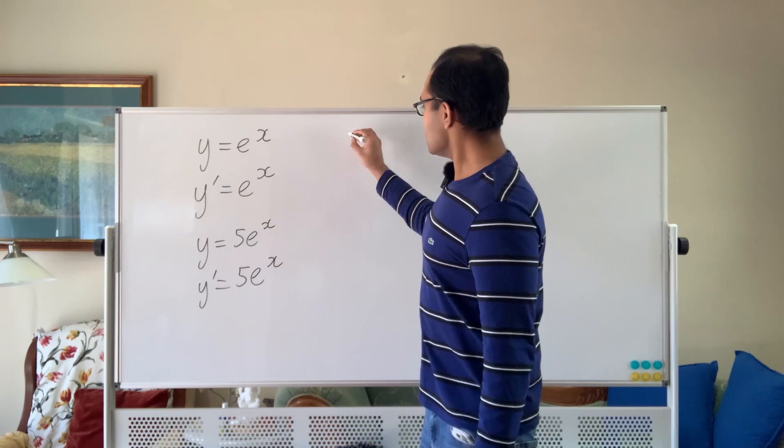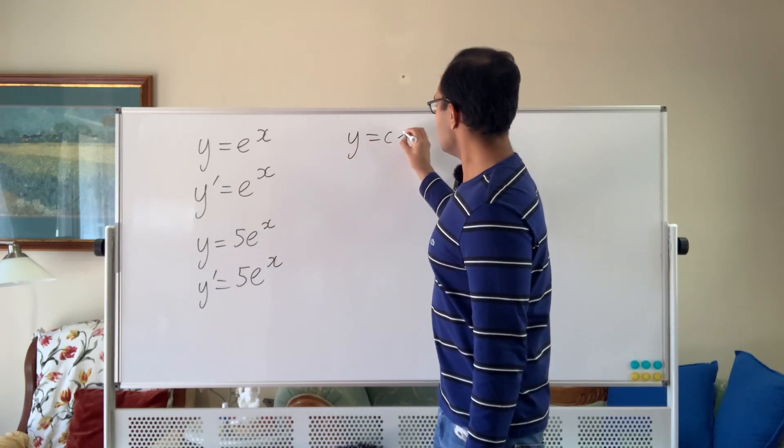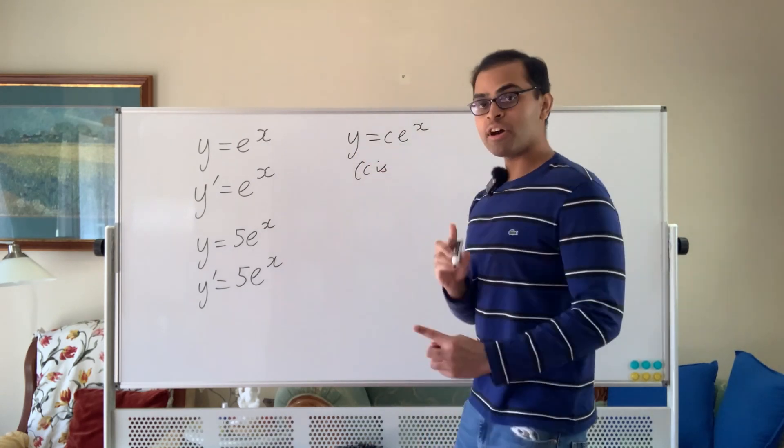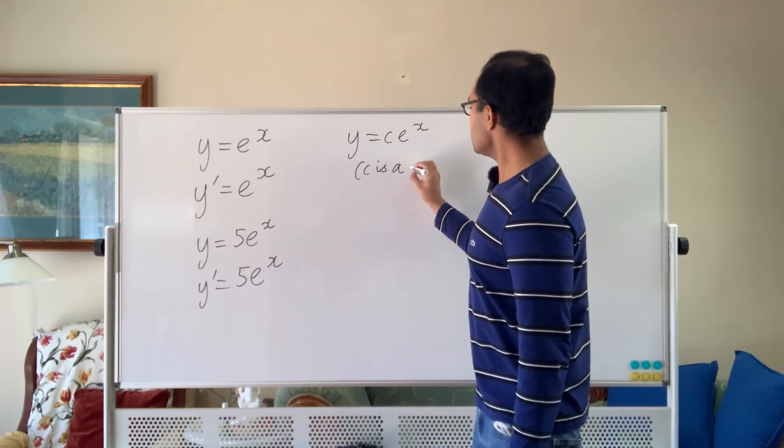And similarly, for any constant. But why are these functions, y equals c e to the x, where c is a constant, the only functions equal to their own derivative? Let's find out.